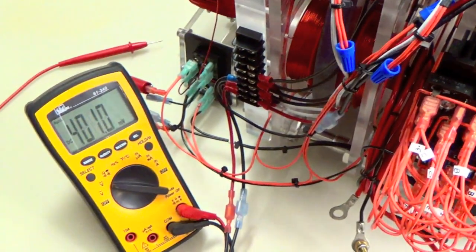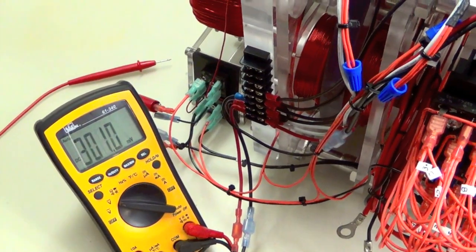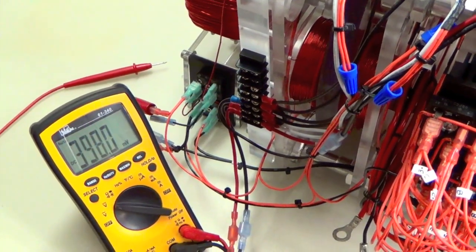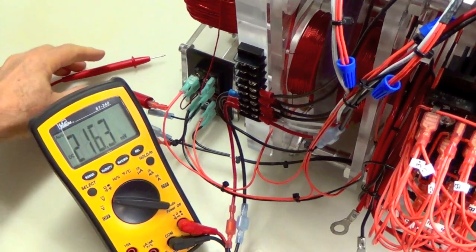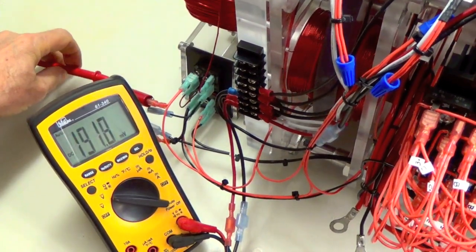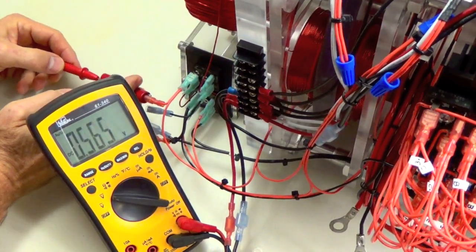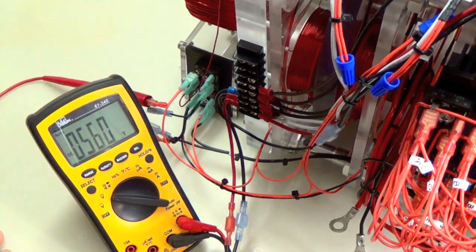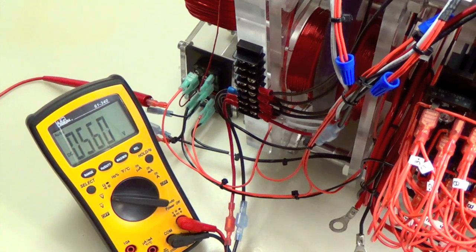Right now, what we're going to show you is we're going to show you the amplified output from the toroid. So what I'm going to do is I'm just going to take this and connect it here. And there you go, 560 volts, 559. Pretty respectable.